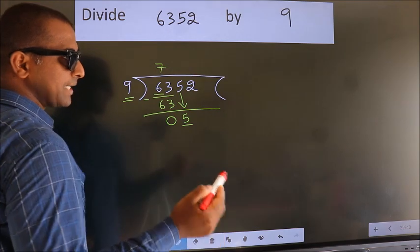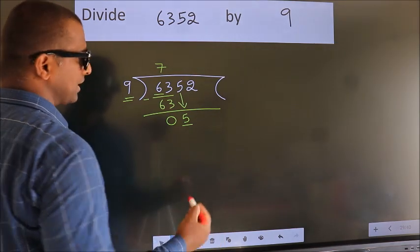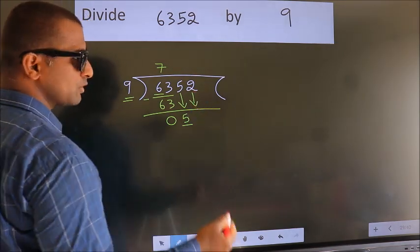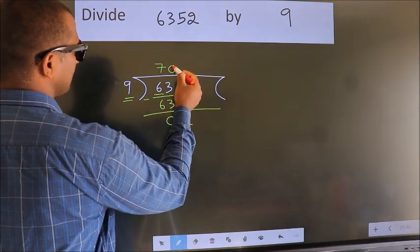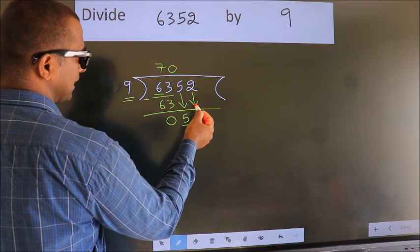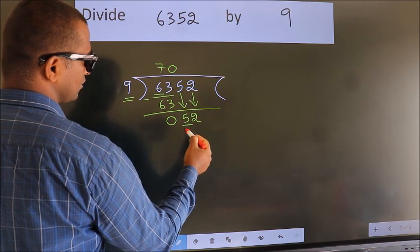So we should bring down the second number. And the rule to bring down the second number is: put 0 here. Then only we can bring down this number. So 52.